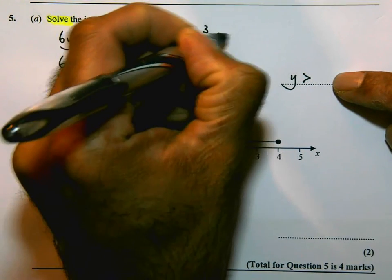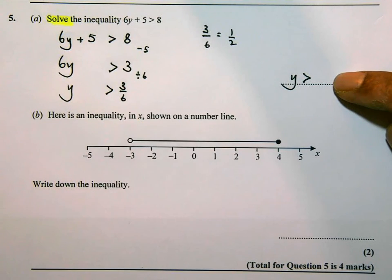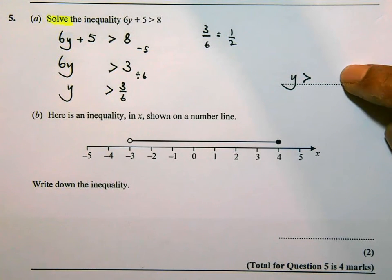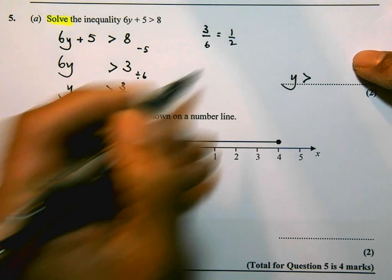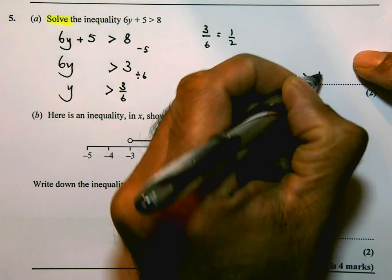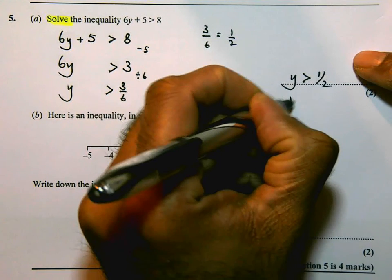Instead of putting 3 over 6, I'm going to put y is greater than a half. You could have put y is greater than 0.5. Both answers would get you full marks in this. So make sure you do understand that and make sure you do put the inequality in there.